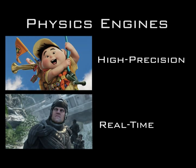There are two types of physics engines available. High-precision physics engines take into account every aspect of physics to produce the maximum amount of realism. However, it takes much longer to render scenes with these engines, so it is not ideal for a game.